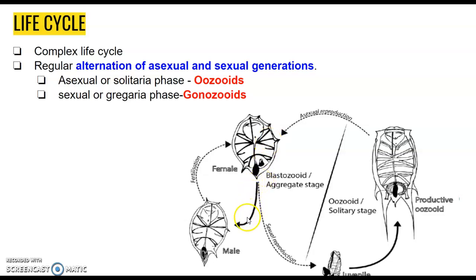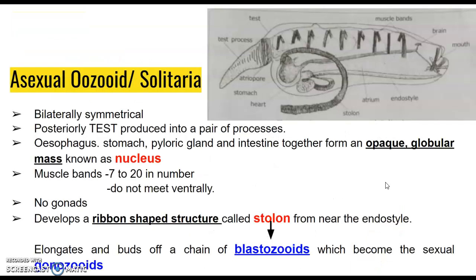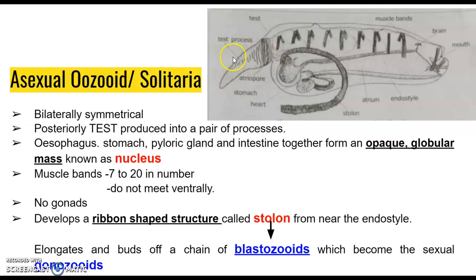They first develop into the female and then the male. After reproduction, the zygote is formed and it develops into the juvenile, which gradually develops into the oozooid. In the asexual oozooid or solitaria, they have bilateral symmetry and in the posterior, the test is produced into a process — an elongation we call the test process.